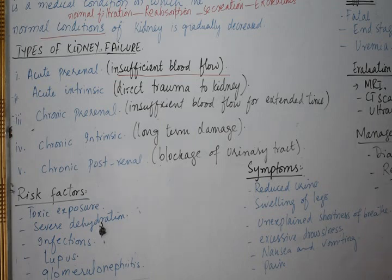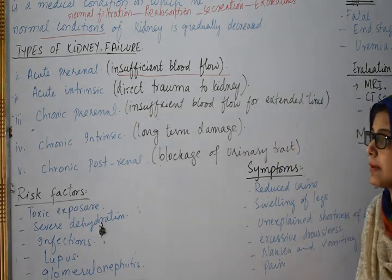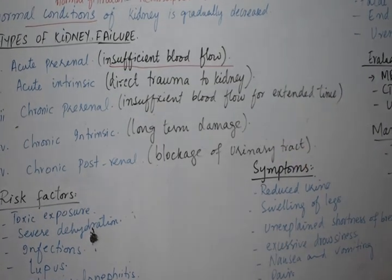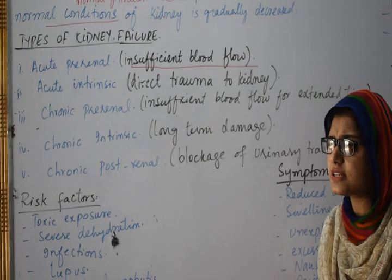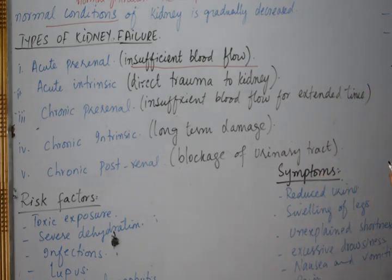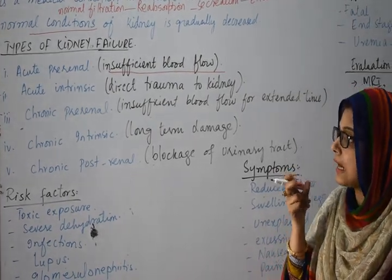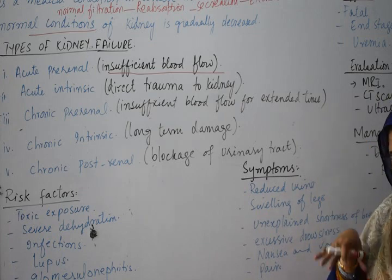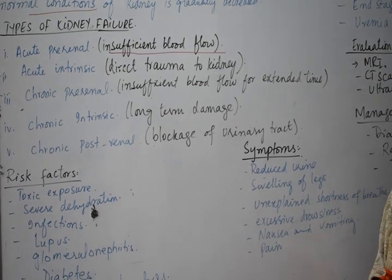We have acute pre-renal failure, which is due to insufficient blood flow. We also have acute intrinsic failure, which means direct trauma to the kidney — for example, a bullet wound, a cut, an accident, or even burns. These are traumas and impacts that immediately damage the kidney. Acute pre-renal can be reversed, but acute intrinsic is not reversed because the kidney tissue is lost.